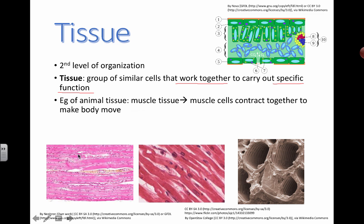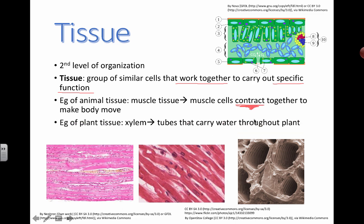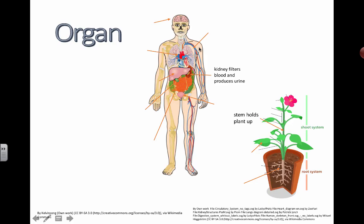For example, muscle tissue: a bunch of muscle cells are working together to contract and make your body able to move. Contracting is a fancy word that means to shorten — your muscles shorten in order to help your bones move. Inside plants, there's a special kind of tissue called xylem — tubes that help carry water. H2O molecules travel through these tubes like super thin little straws. That's the second level.